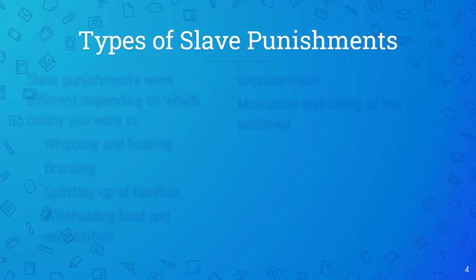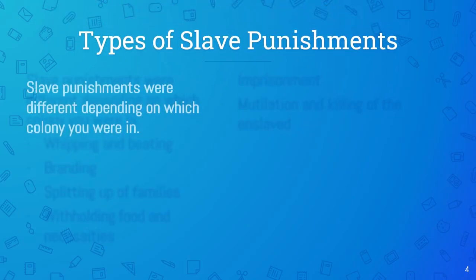Types of slave punishment. Slave punishments would have been different depending on which colony you were in. If you were in a French territory, a Spanish territory, or a British territory there are going to be some differences. Also, if you're in the Bahamas compared to Barbados or Jamaica, there are going to be some differences. It all depends on where you are.